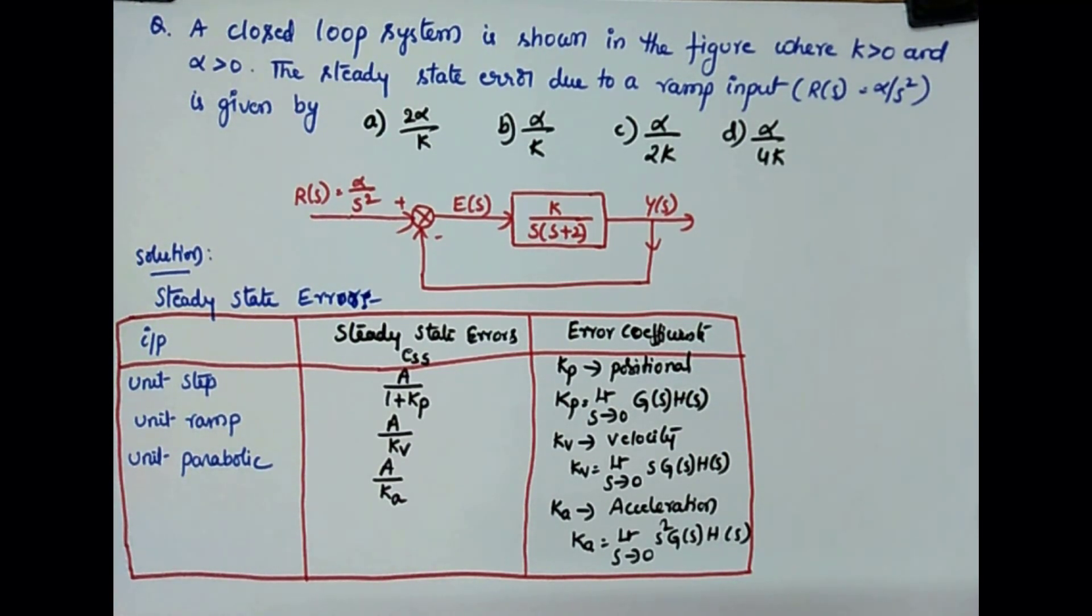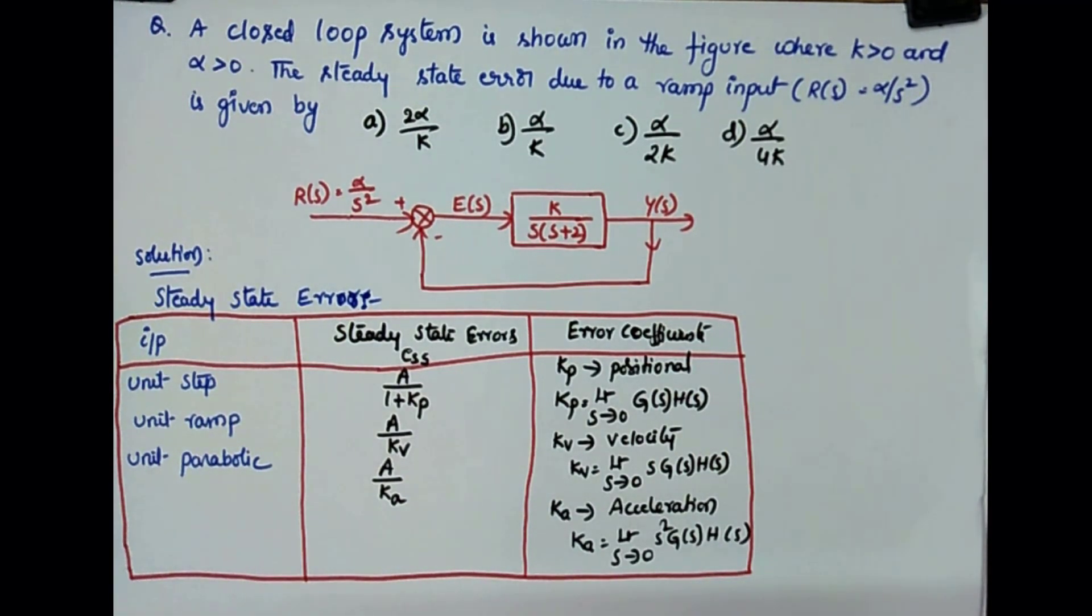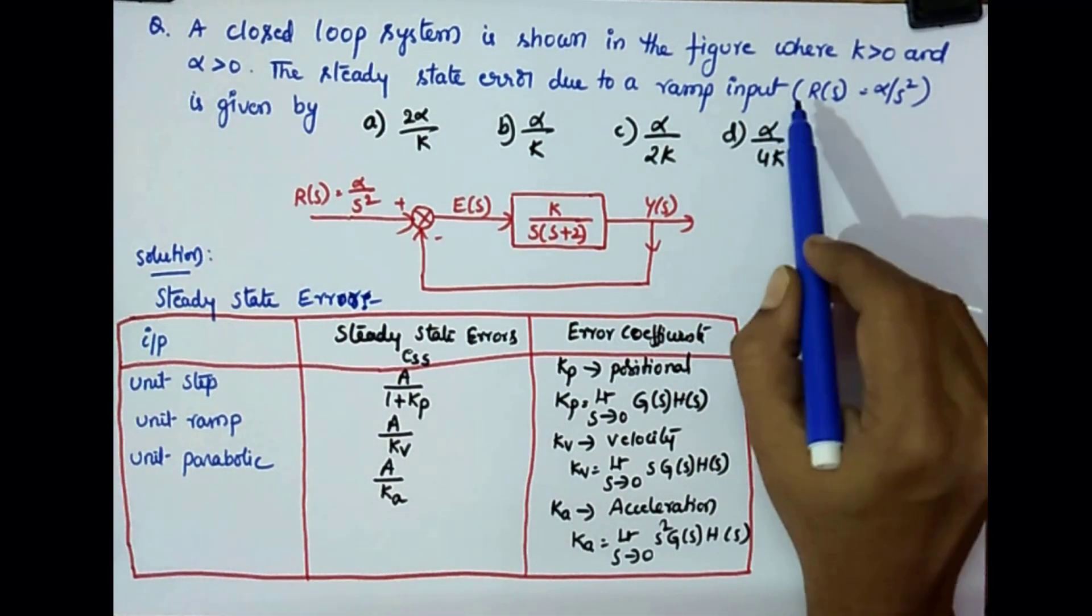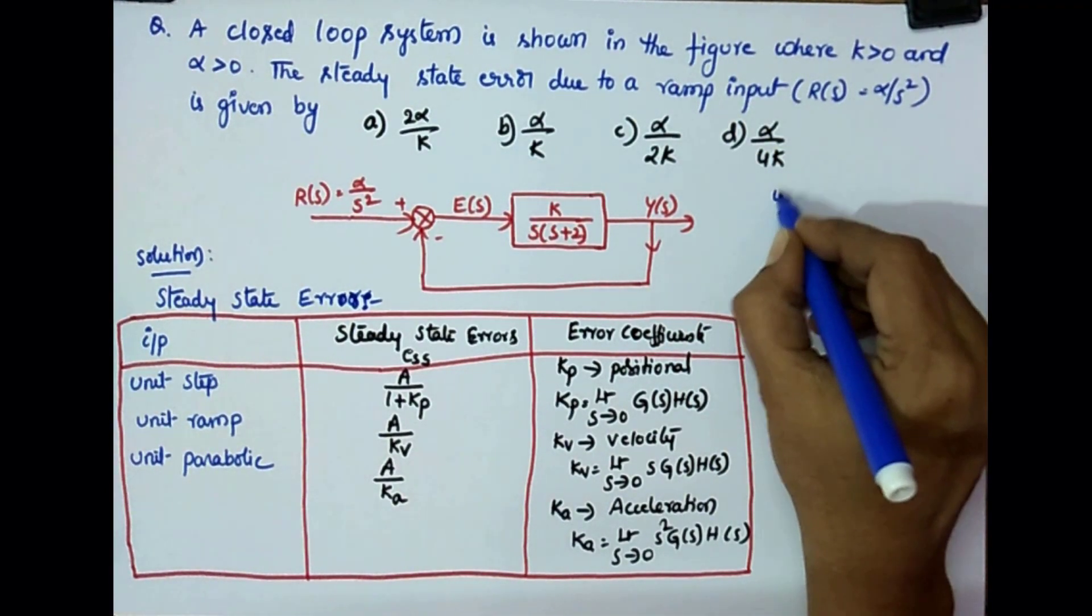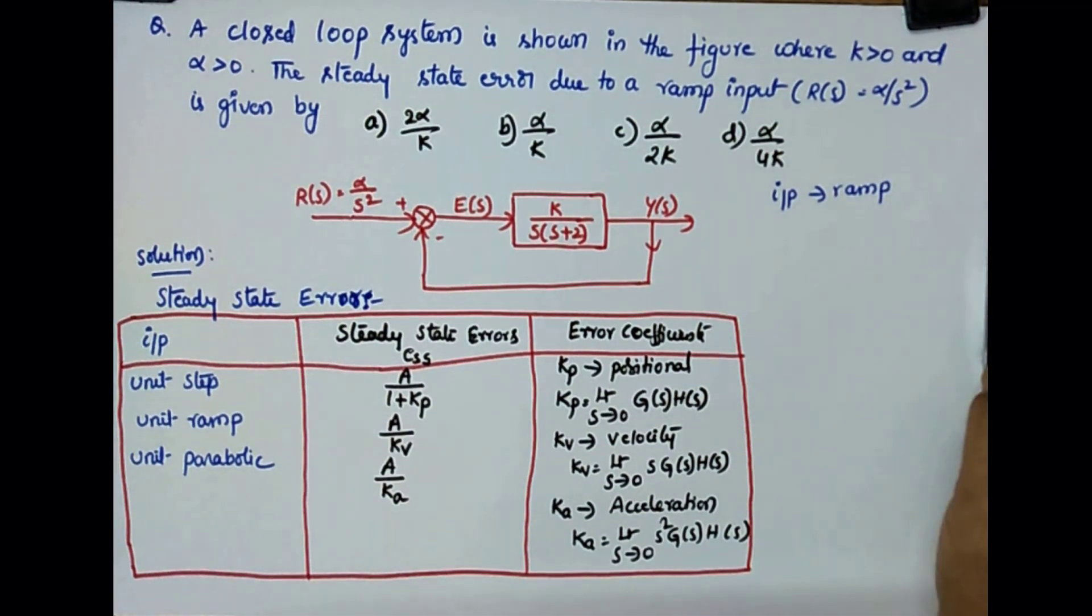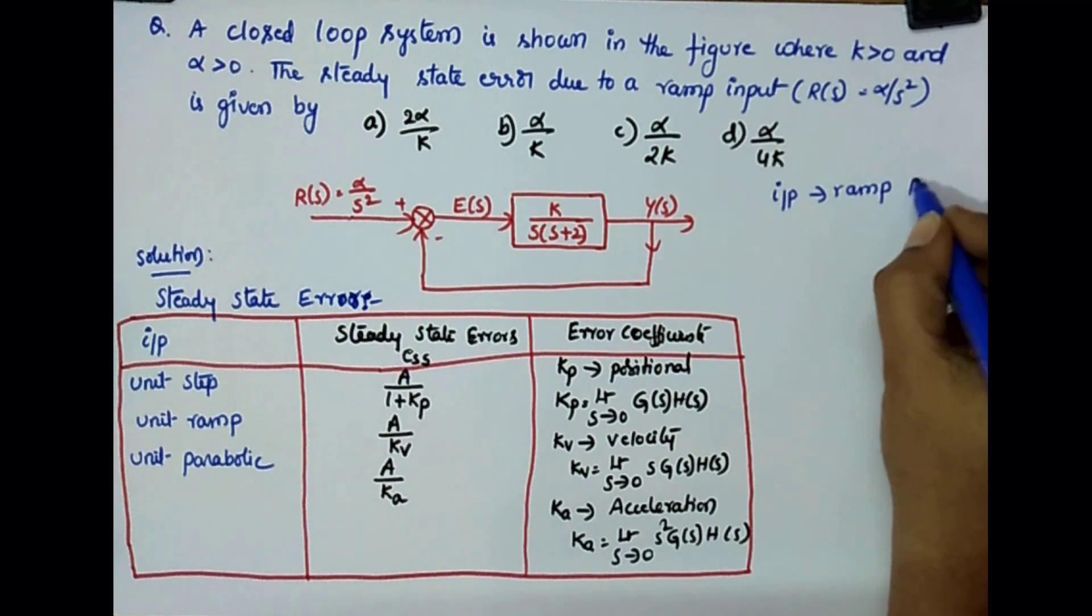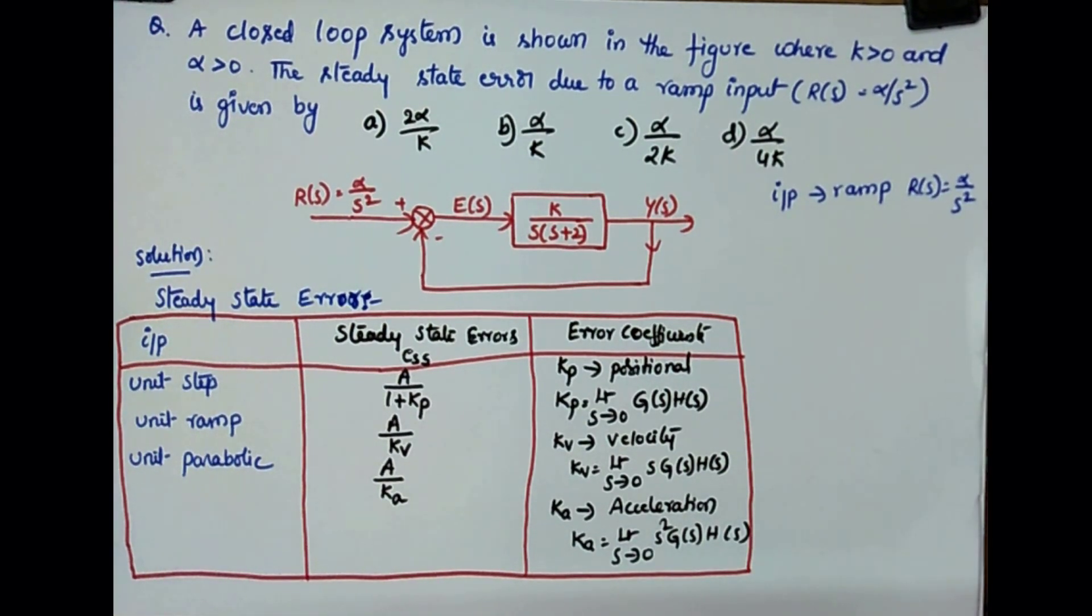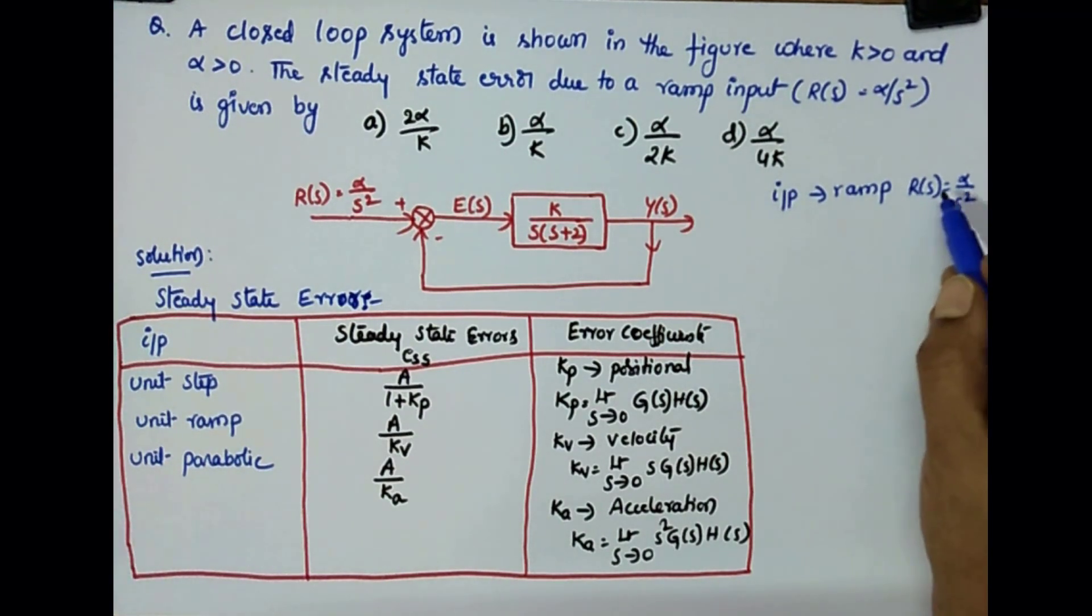Now we will see our problem. R(s) is alpha by s squared. What is alpha? Magnitude of the ramp.